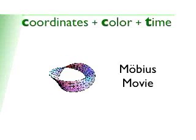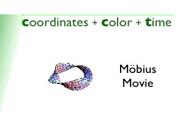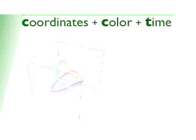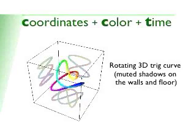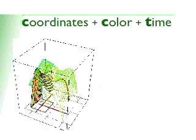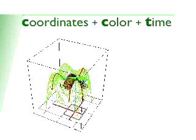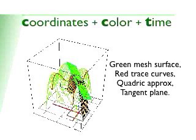Here's a Mobius strip twisting and untwisting itself. Here's a colored 3D parametric curve rotating inside a room with shadows. Remember, everything here is numbers. I did it in Mathematica. And a pretty fancy-looking trig surface with a tangent plane and a quadric approximation. Check it out.